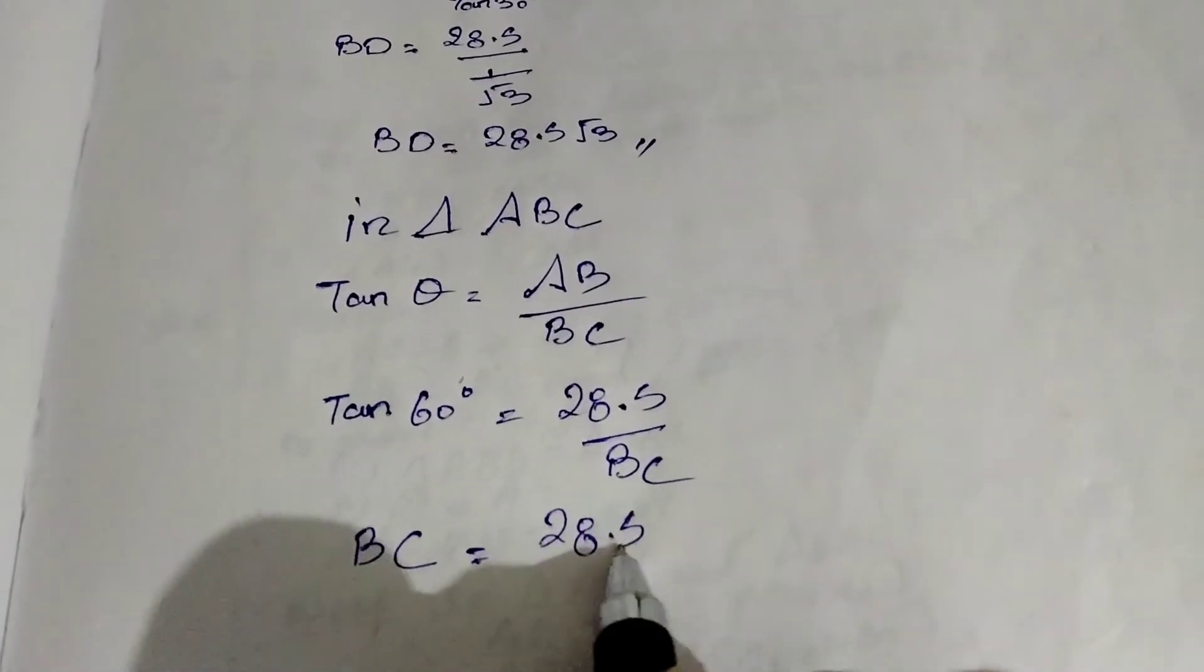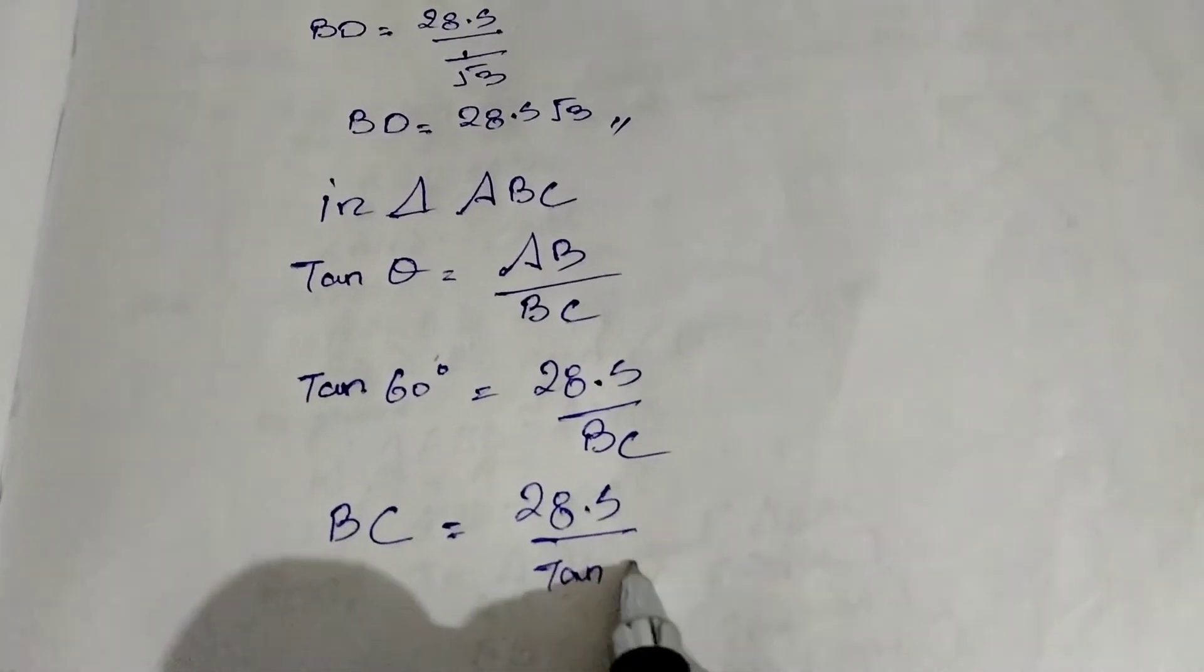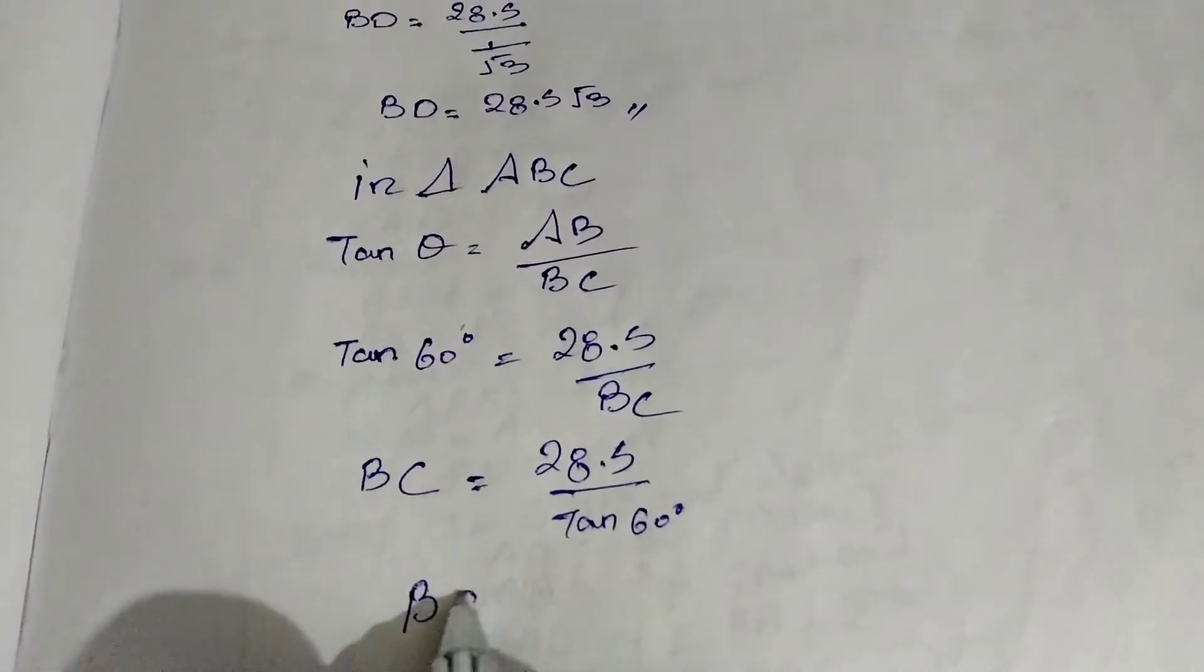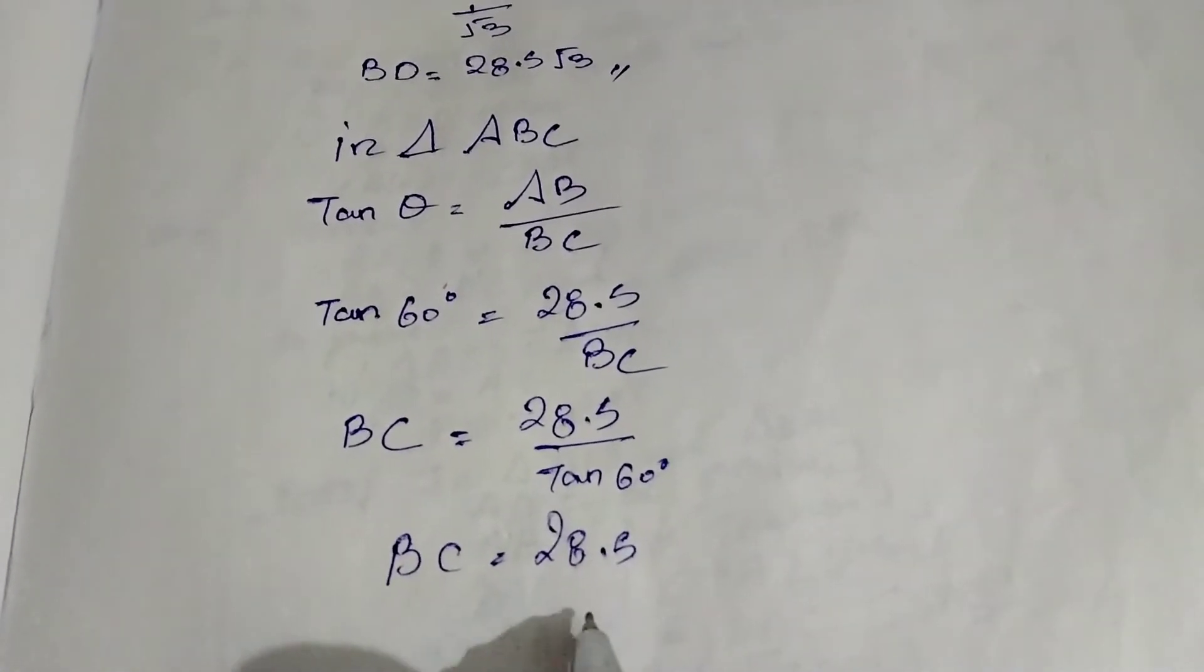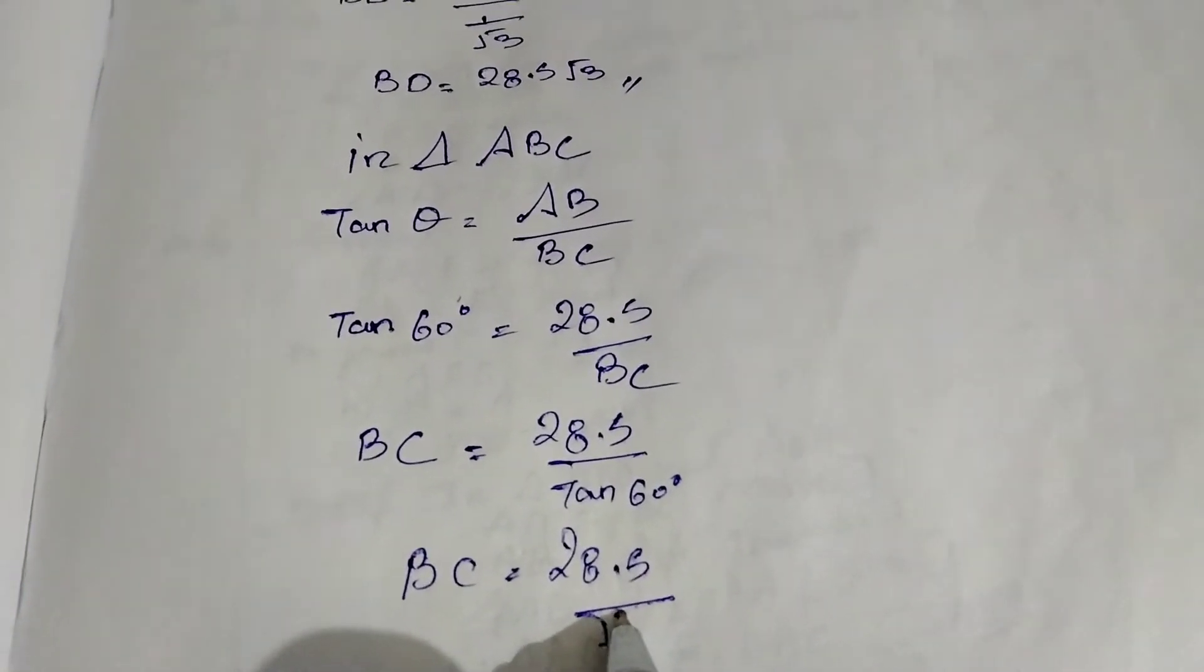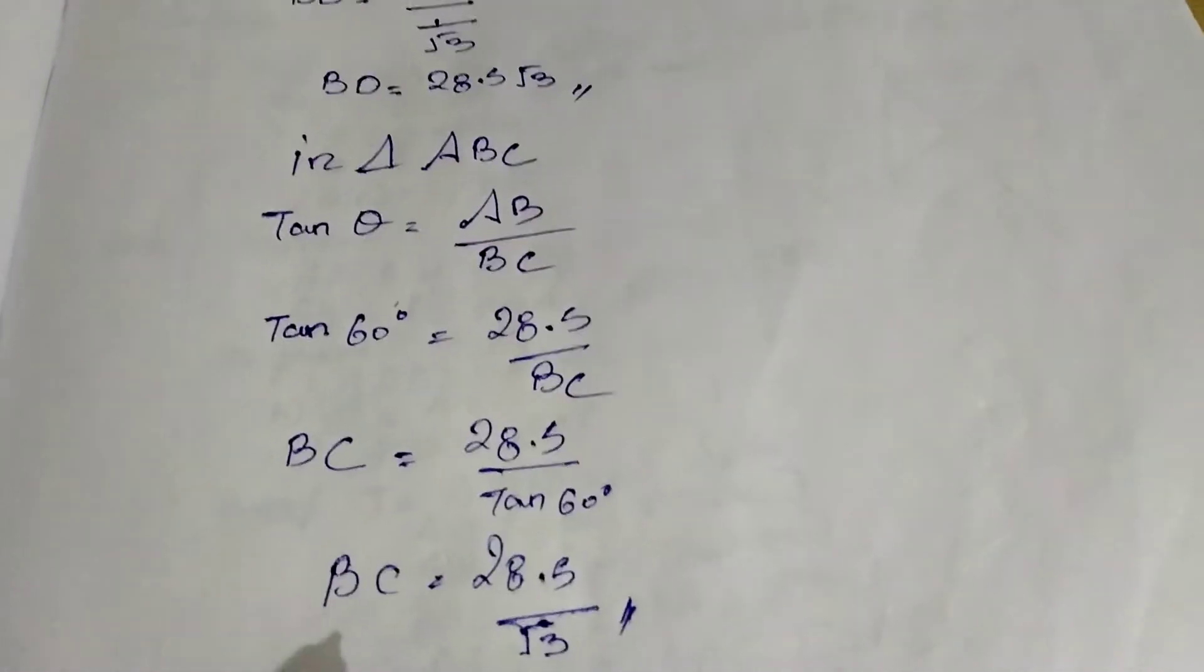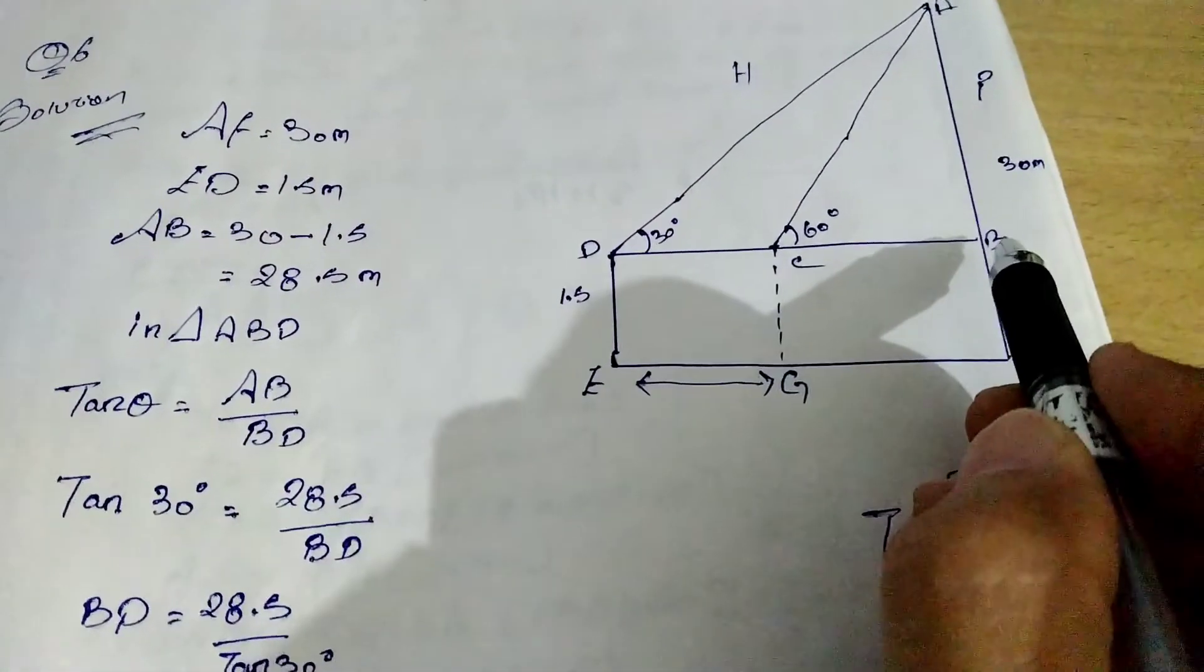So 28.5 by tan 60. Next line. BC equal to 28.5, tan 60 is what? Root 3. By root 3. So we got BC as 28.5 by root 3. Now we already got BD and we have BC. So we'll minus BD with BC to find this answer.